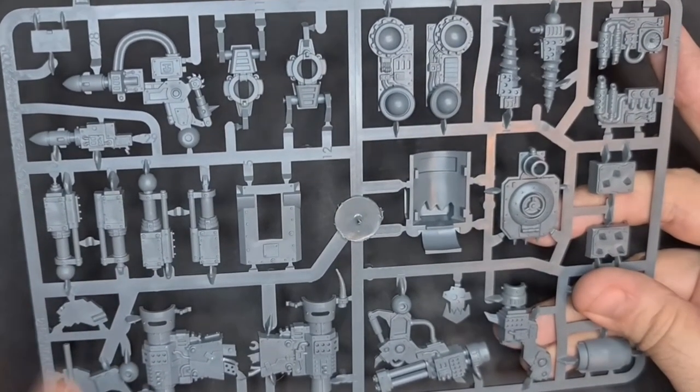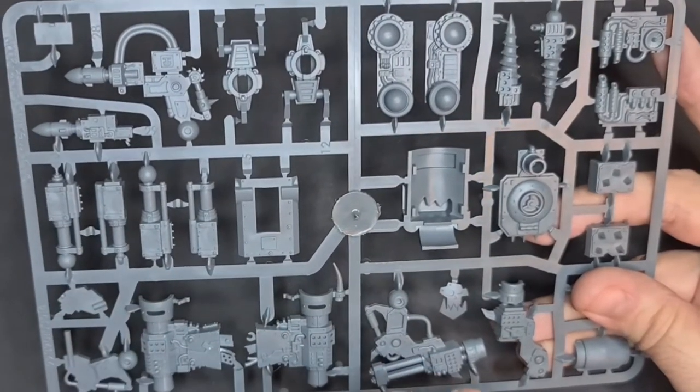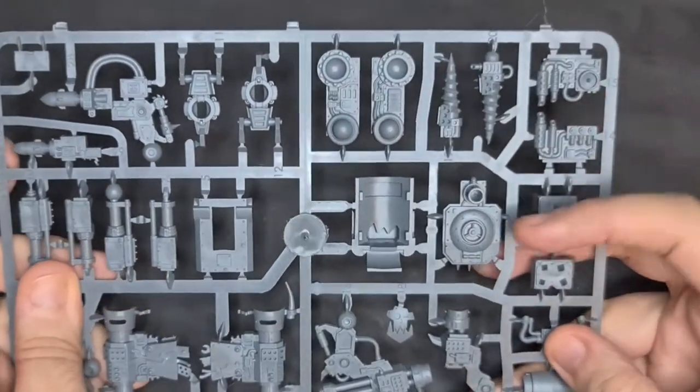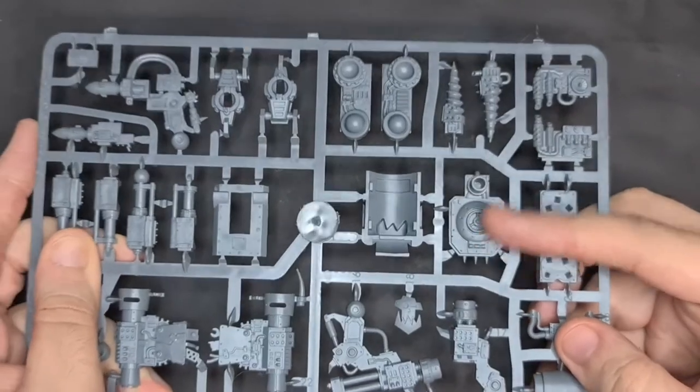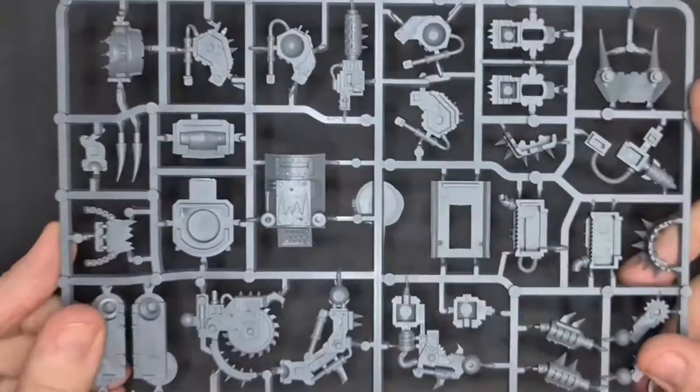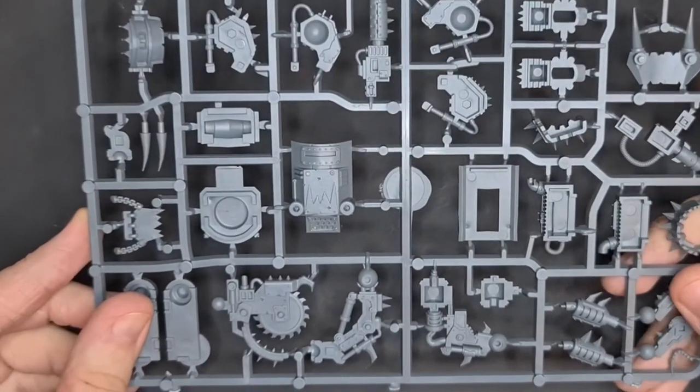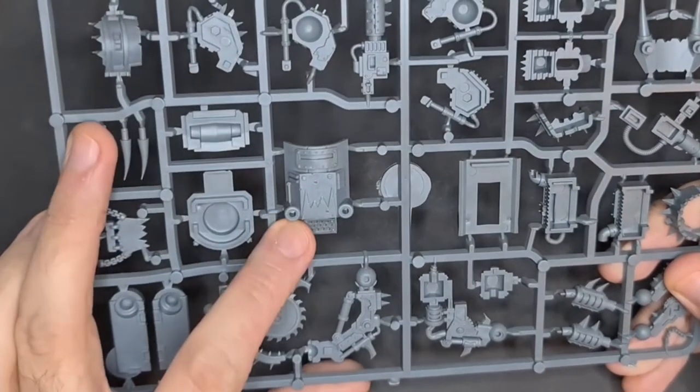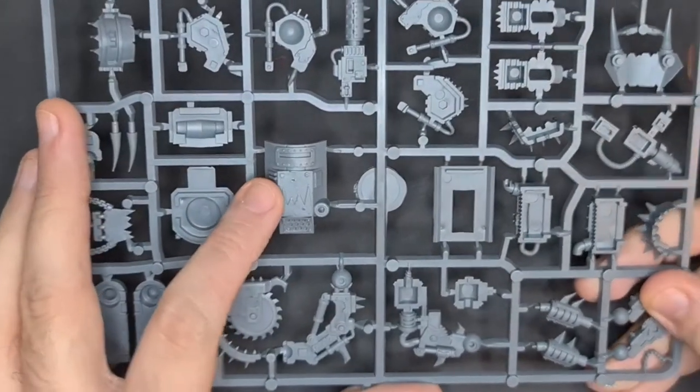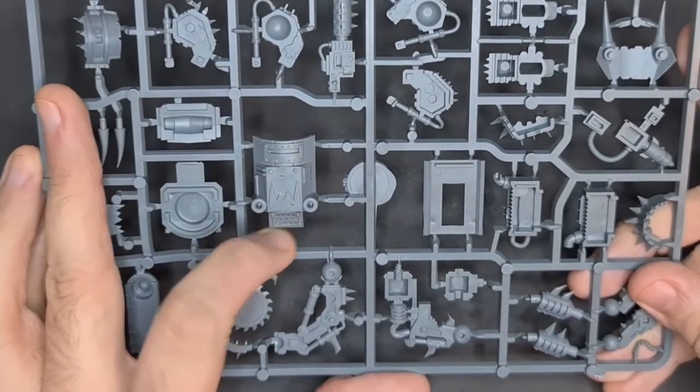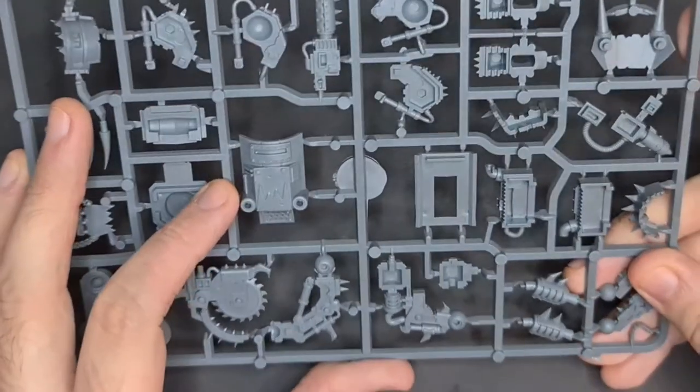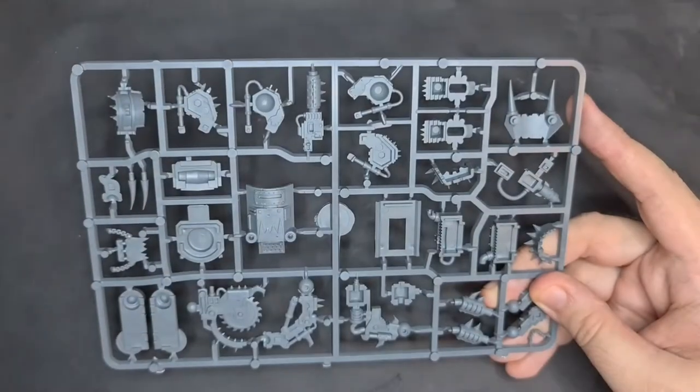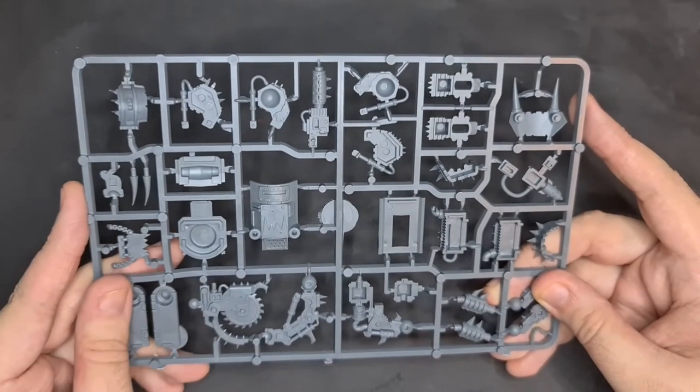The weapons are really good, not too over the top. Nice little hatch for your grot to go inside. You've got your driller. And we've got our last sprue. He's almost like a cyclops looking one if we're going with that's a face sort of idea.